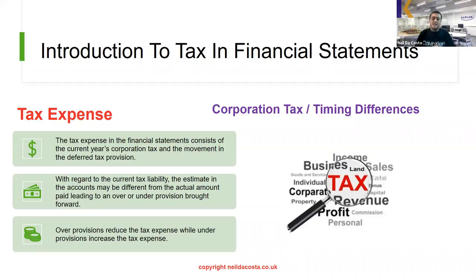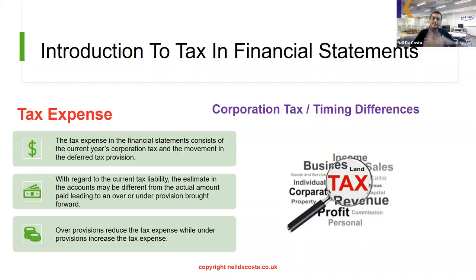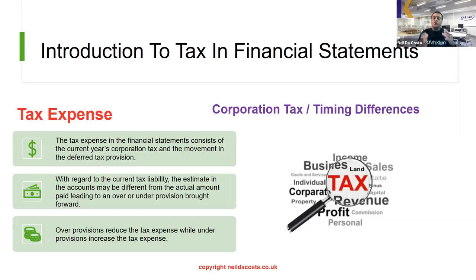With regard to the current corporation tax liability, the company would make an estimate as to what they would expect to pay the tax authorities. But the actual amount paid may be slightly different, creating either an over or an under provision. If we over-provided for tax in the previous year, that over provision will reduce the current year's tax expense, while any under provision would increase it.